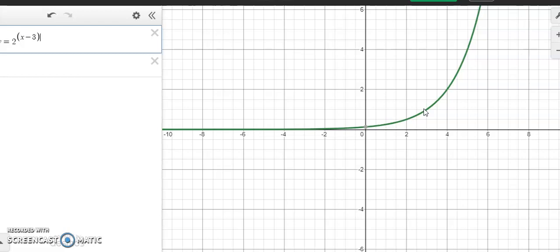Our vertical shifts do what they look like. Positive moving up, negative moving down.